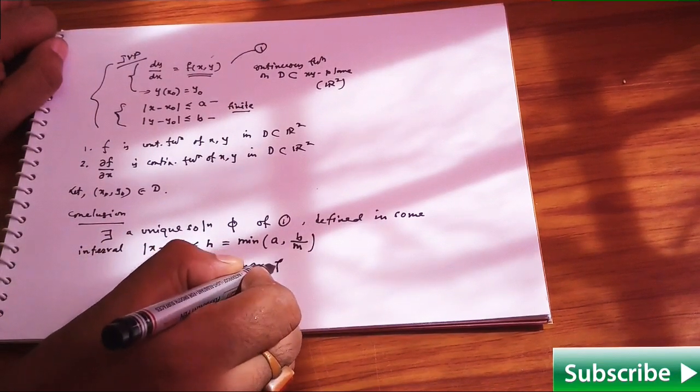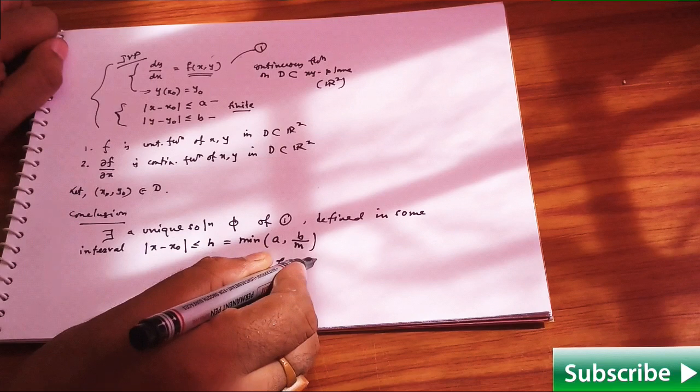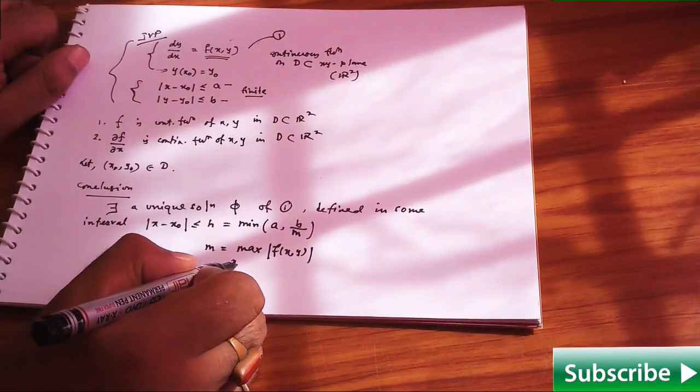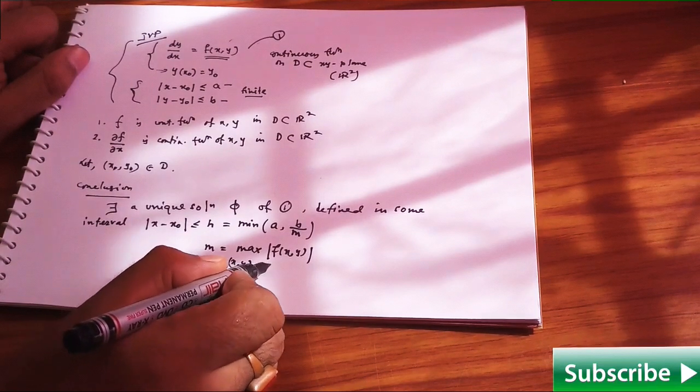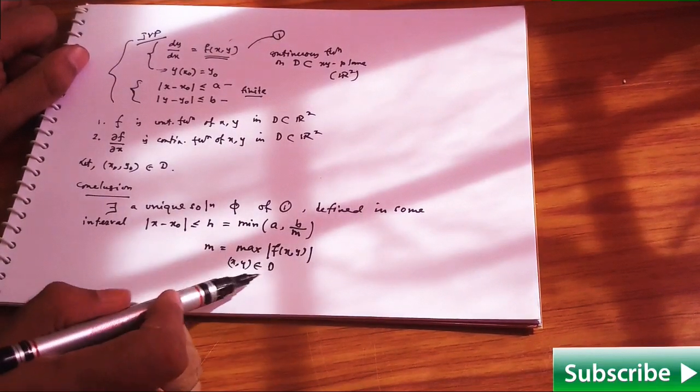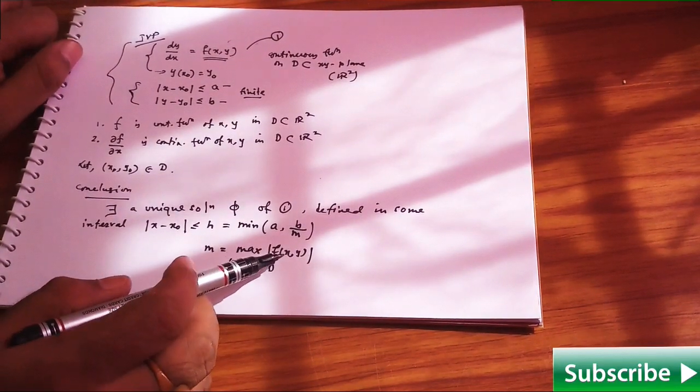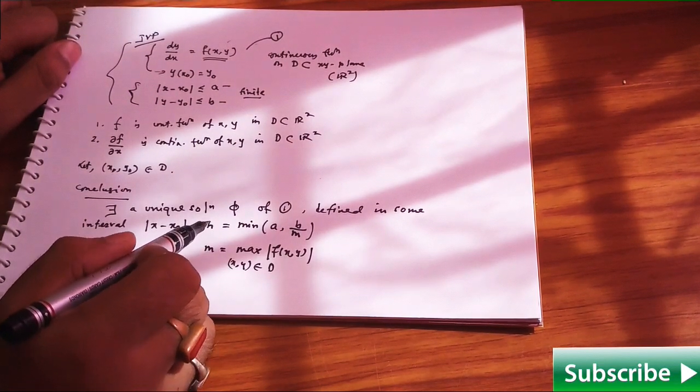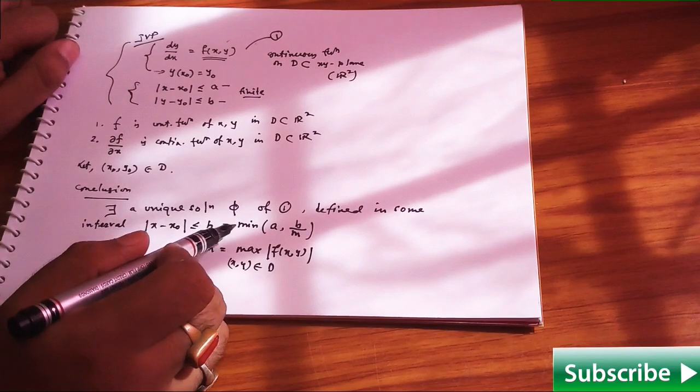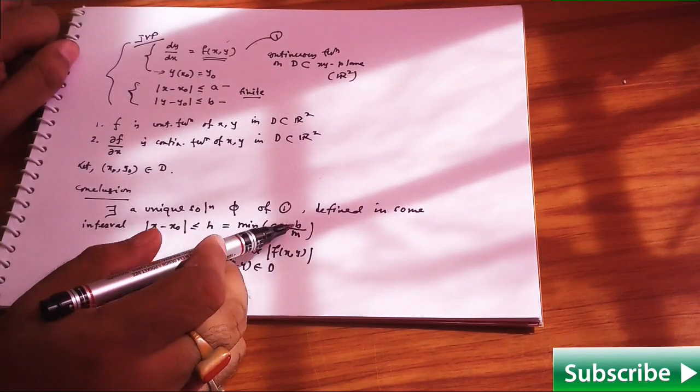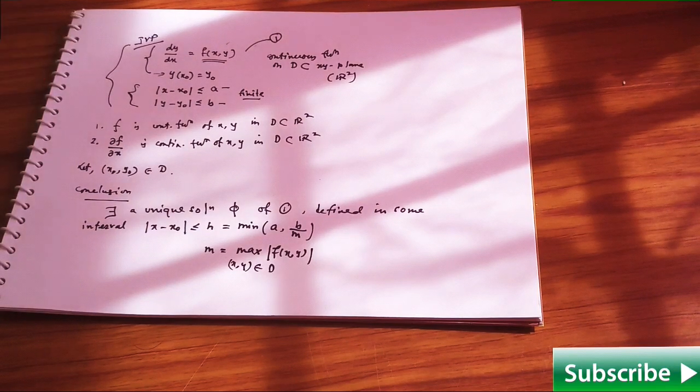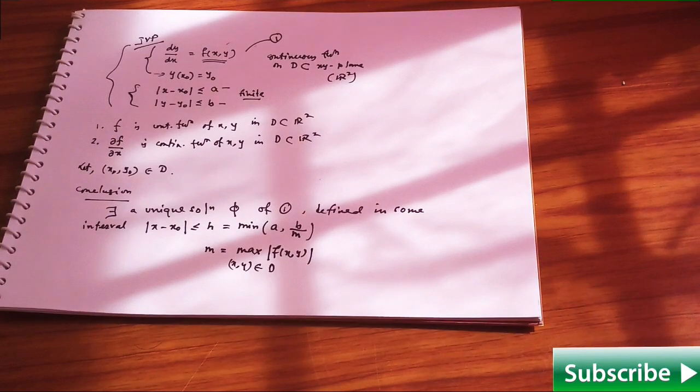What is your m? This m is the maximum of modulus of f of xy, and obviously this xy belongs to that domain. In that domain, the maximum value of f of xy is going to be our small m. You have to find h equals minimum of a, b/m. Thus, we will get the interval of existence of the solution.